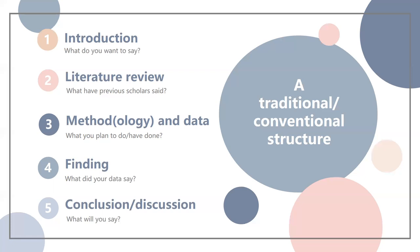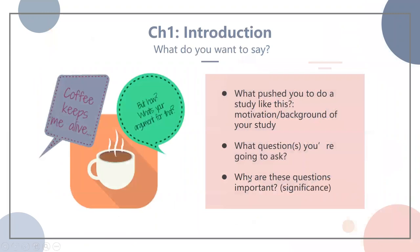In general, this is a structure that could be applied to academic writing. Usually there are five stages, chapters, or sections. The first one starts with the introduction — what do you want to say or ask? The second is a literature review — what have previous scholars said? Third, a methodology or data section discussing what you did to collect your data. Fourth, you present your findings — what did your data say? And last, a conclusion or discussion section.